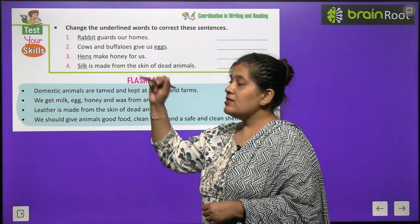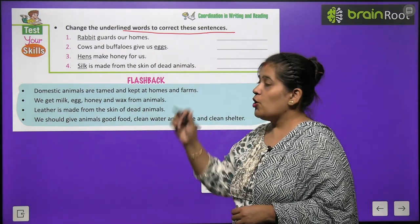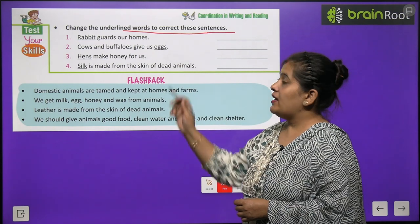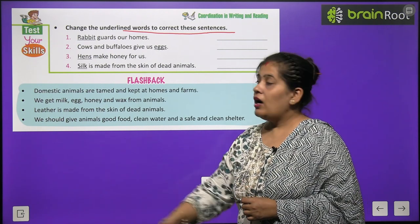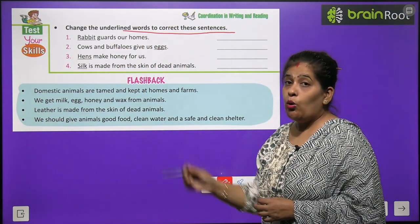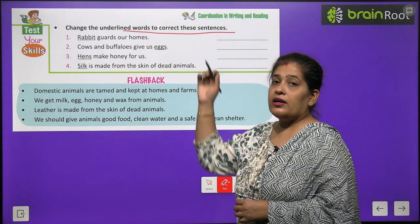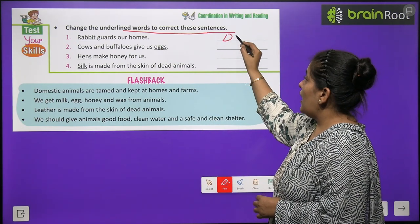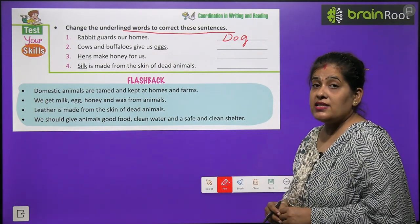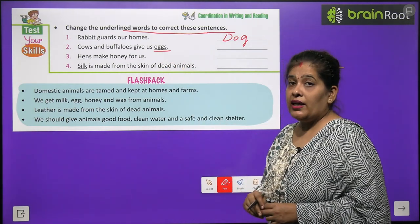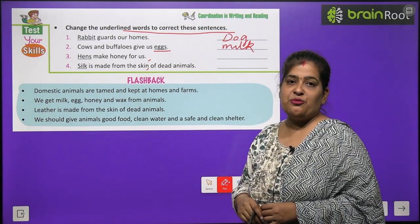Now time to test your skill. Change the underlined words to correct these statements. Yaha pe kuch statements di hoi hai, lekin kuch words ke niche underline hai. Toh hume statements ko sahi banane ke liye underlined words ko change karna hoga. Number one: Rabbit guards our home — rabbit ke niche underline hai, toh rabbit ki jagah ae ga dog, kyunki korn hamare ghar ki rakhwali karta hai? Dog. Number two: Cow and buffalo give us egg — egg ki jagah ae ga milk, wo hume milk deti hai. Number three and four you will do by yourself.